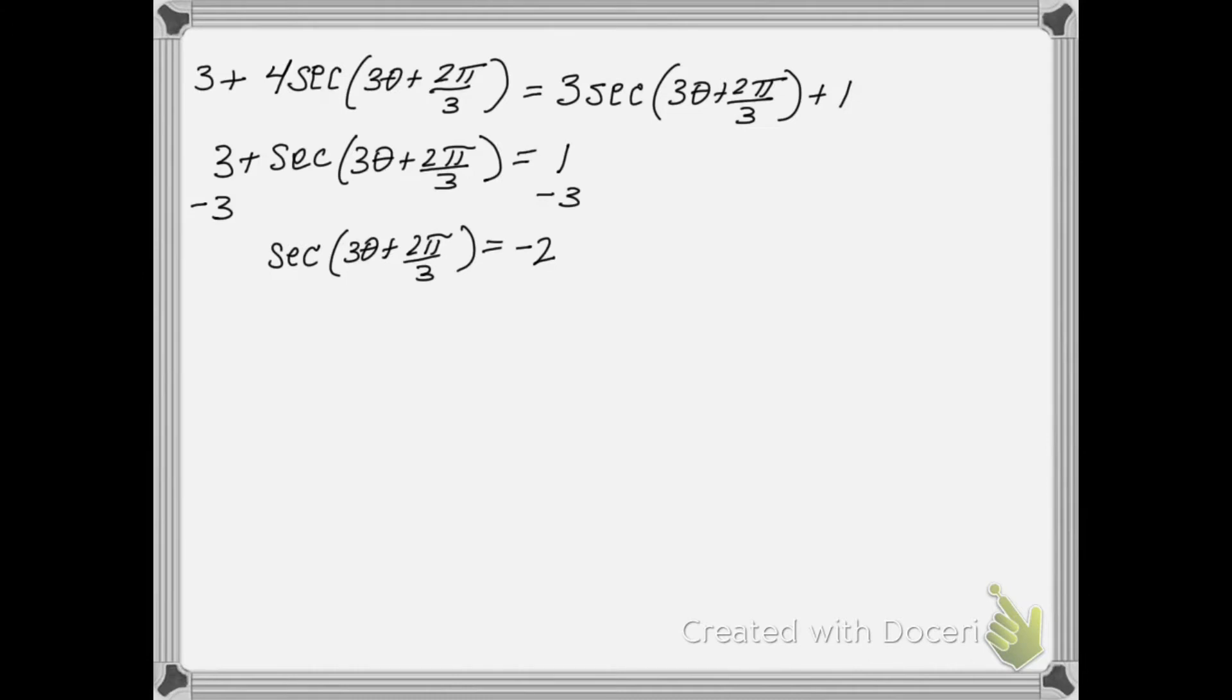This looks like something familiar, for instance, if I had cosine of theta equal to negative root 2 over 2. But it's a little bit more involved. I've got this 3 theta plus 2 pi over 3 as an argument, a value that I'm taking a secant of. And then this theta is an argument.